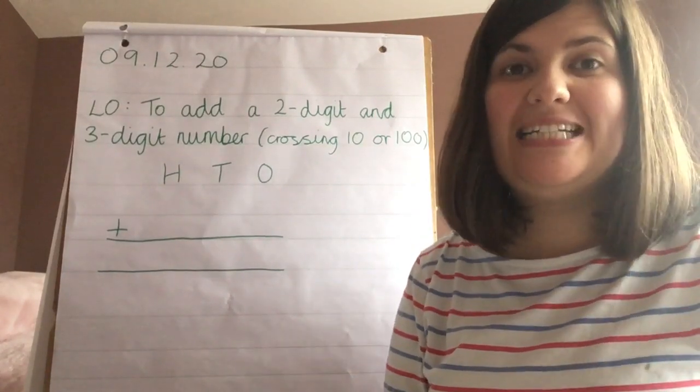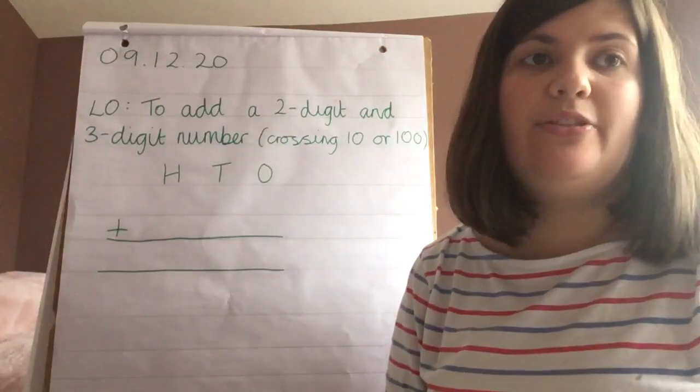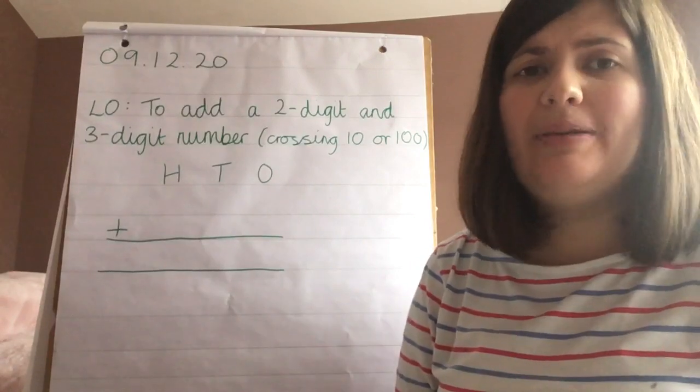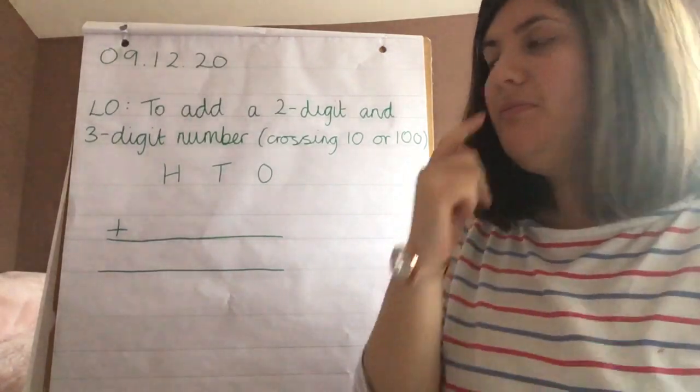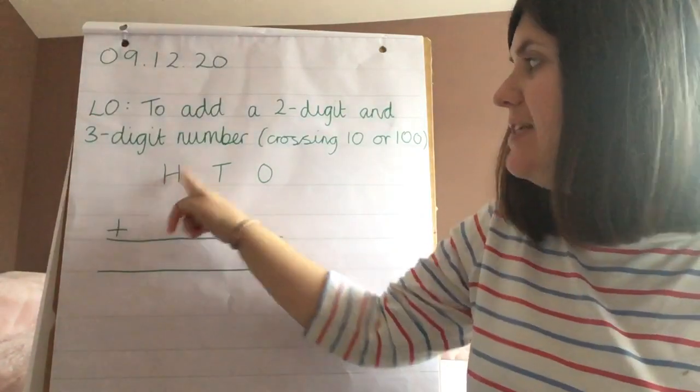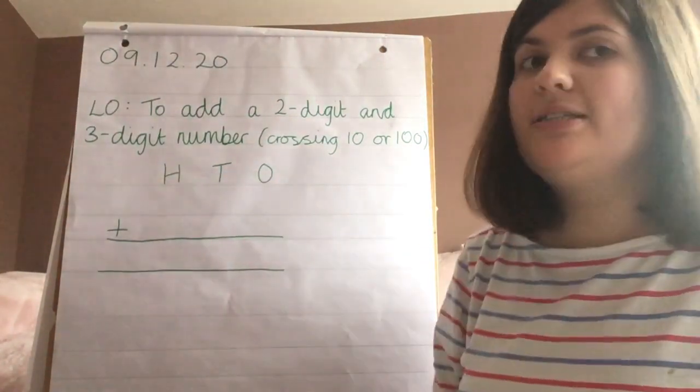Good morning otters, and today in math you're going to be adding a two-digit and a three-digit number, but this time we'll be crossing ten and a hundred so there will be at least one exchange. Again we're going to be using column addition, and depending what you found useful yesterday you might want to draw the hundreds, tens, and ones again today.